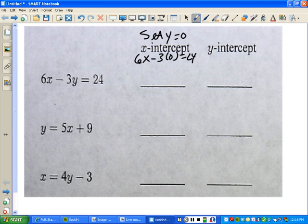After you set y equal to 0, you solve for x. So in this case, 6x equals 24. You're going to divide by 6, divide by 6, and you'll get x is equal to 4.